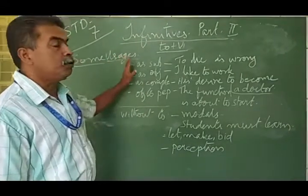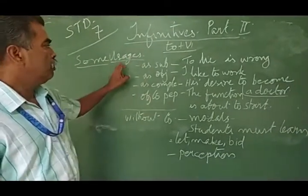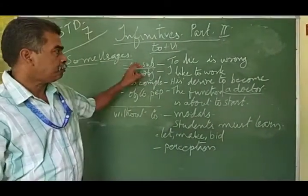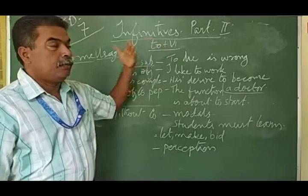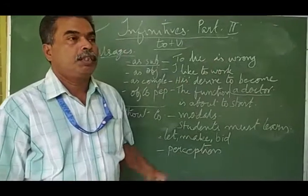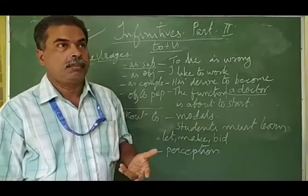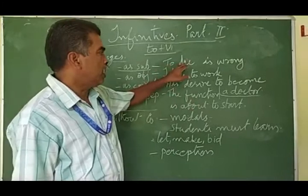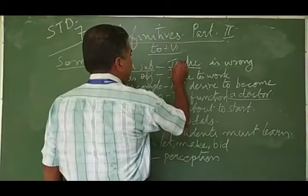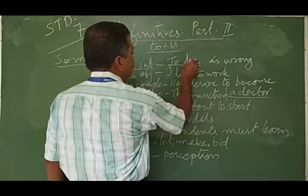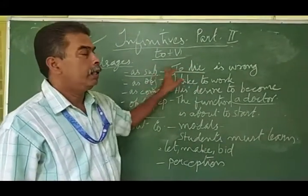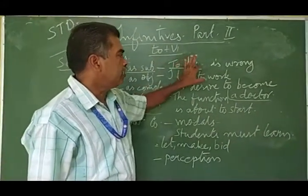It has got many usages. Some of them we will go through. First one is infinitives are used as subjects. For example, to lie is wrong. Here, to lie - lie is a verb, and to lie has become the subject. Is wrong is the verb and object.